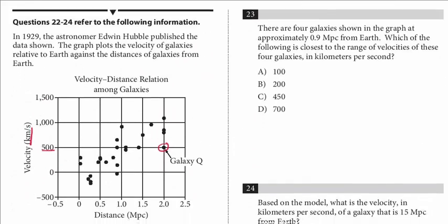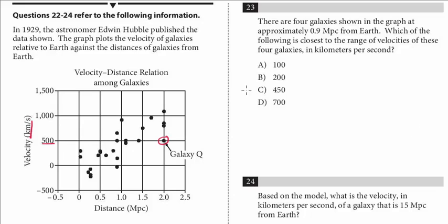All right, we've got two more questions relating to this data, number 23. There are four galaxies shown in the graph at approximately 0.9 megaparsecs from Earth. Which of the following is the closest of the range of these velocities of these four galaxies in kilometers per second? All right, so 0.9 megaparsecs. Remember, megaparsecs, that's on the X.